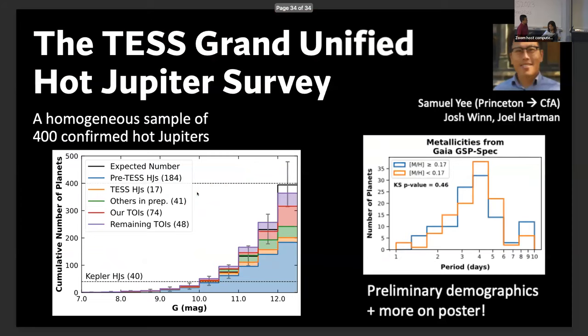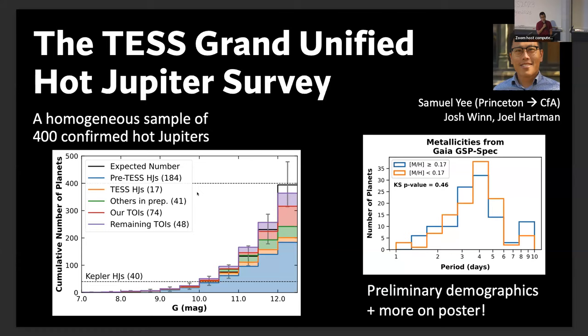Hi everyone, I'm Sammy. I will hopefully defend my PhD in a month. Over the past two years we've been conducting a large survey to assemble a complete magnitude-limited sample of hot Jupiters orbiting FGK stars. The study is almost complete and comprises about half of hot Jupiters previously known from ground-based transit surveys, and about half are new detections from TESS. If you're interested in demographic results from our survey, or in how you can use this sample to select new targets for more detailed characterization, please come to my poster. Thank you.